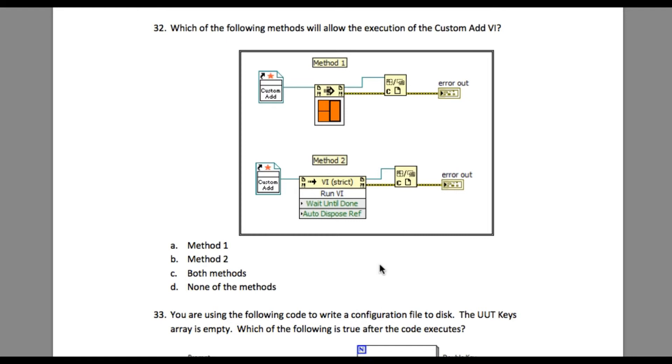The method node will not be able to run the strictly typed VI. Method 1 is going to run the VI properly as it works with the strictly typed VI reference, so the answer is A.